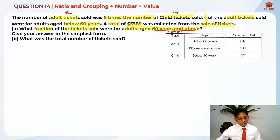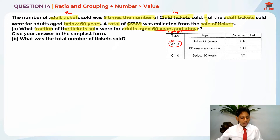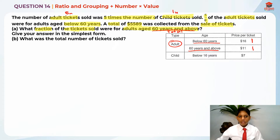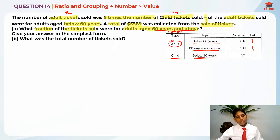They've given us a table showing one type which is adult, and within the adult category there are two separate categories: below 60 and 60 years and above. The prices per ticket are $16 for below 60 and $11 for above 60. For children, who are below 16 years old, it's $7.